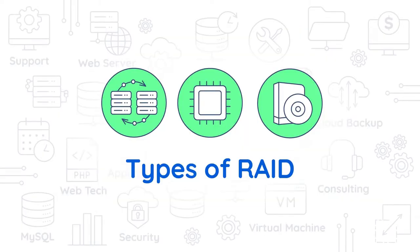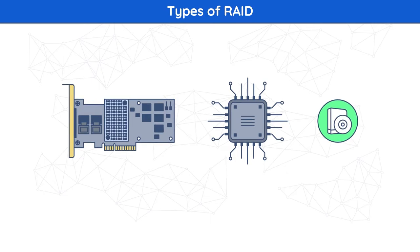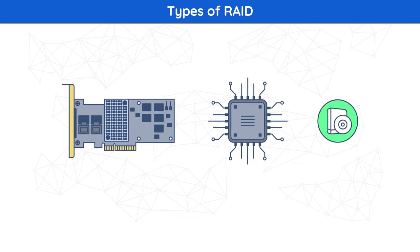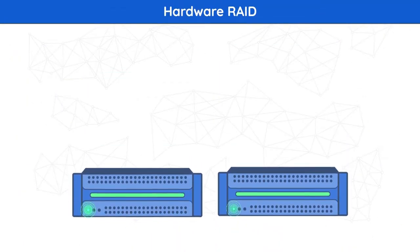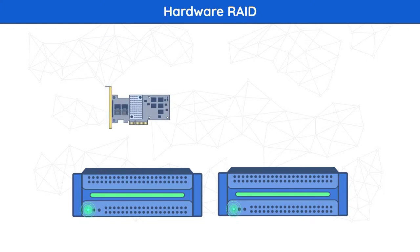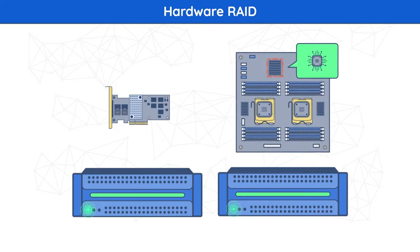Types of RAID. Storage administrators can deploy RAID as hardware — a controller card or chip — or software: software-only or hybrid. A dedicated hardware controller provides hardware-based RAID services. IT can deploy Hardware RAID in two ways: an external RAID controller card or internal RAID on chip.